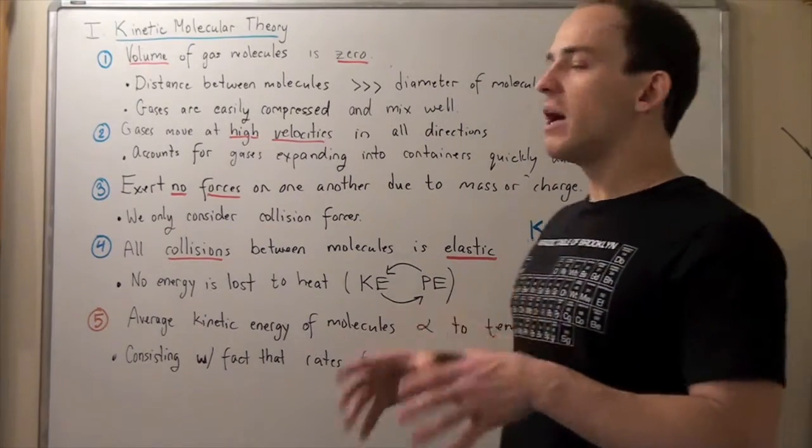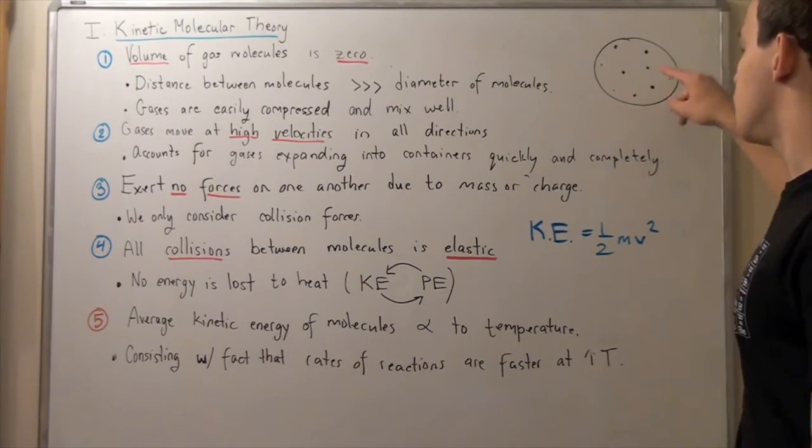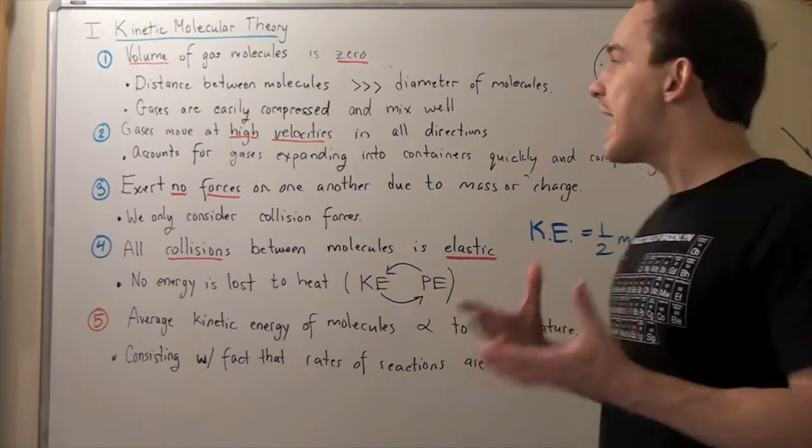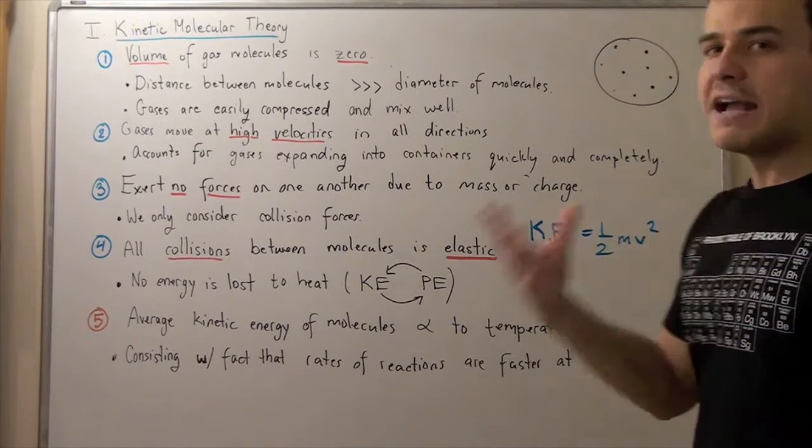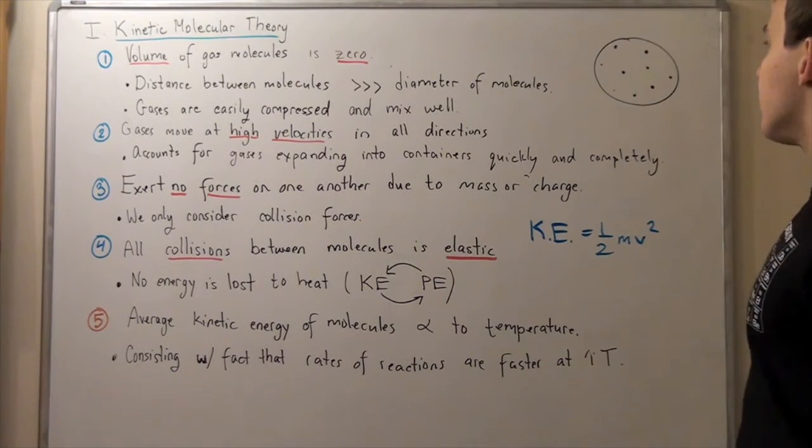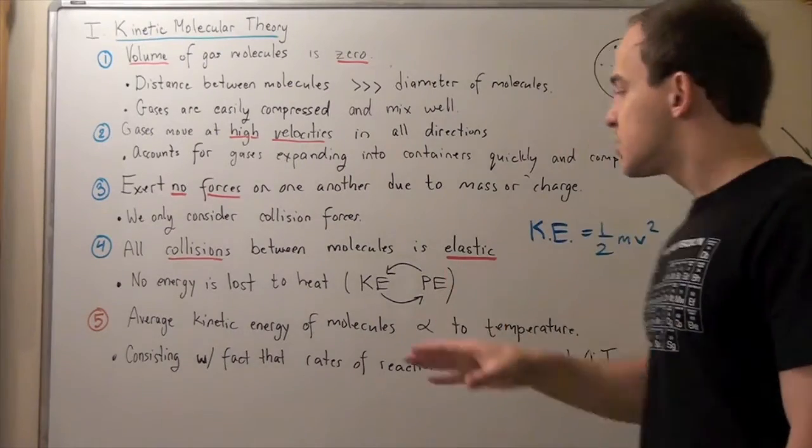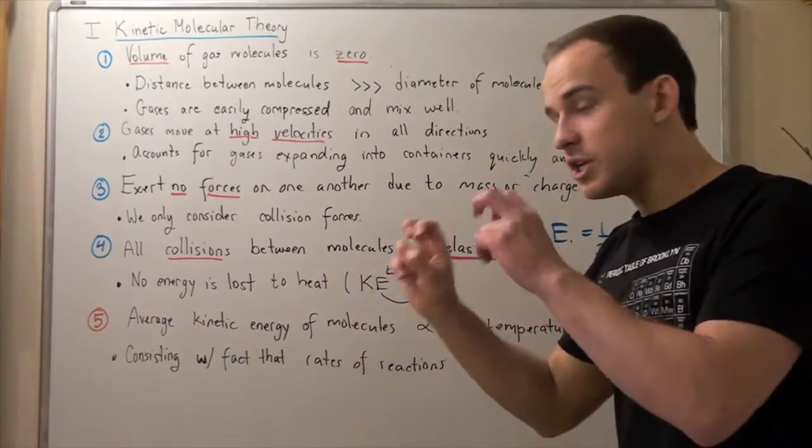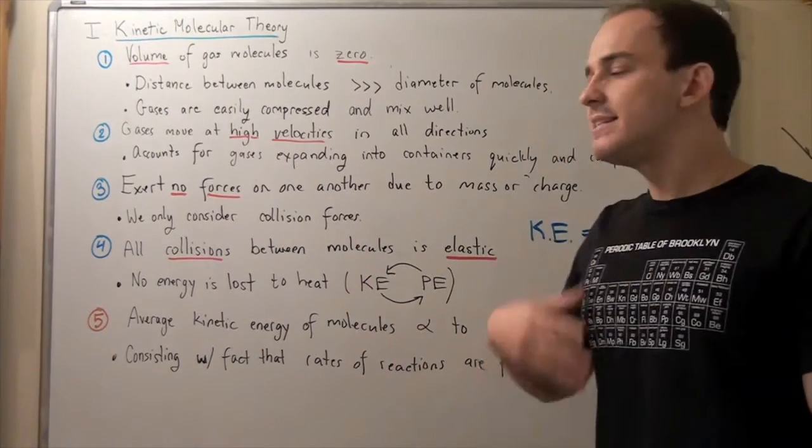We can also talk about the average velocities of the molecules. And that's simply the average of all the molecules found in our system. So, on average, if you pull out a molecule from our system, it will have an average speed. So, this fifth assumption directly goes into a concept called effusion and diffusion.